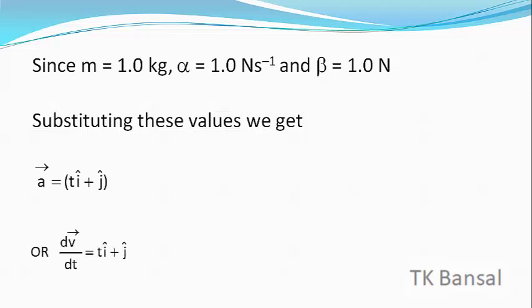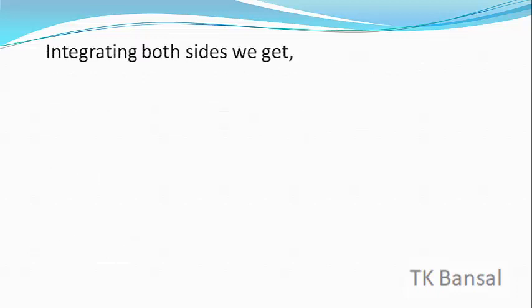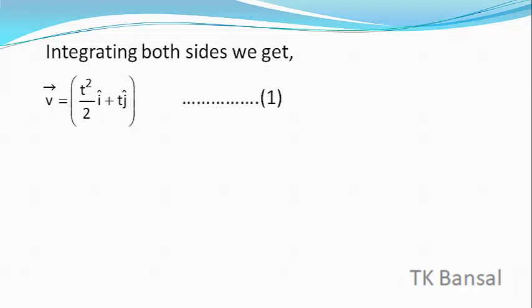So dV/dt = T î + ĵ. Integrating both sides with respect to t, we get velocity V vector = (T²/2) î + T ĵ — this is equation 1.